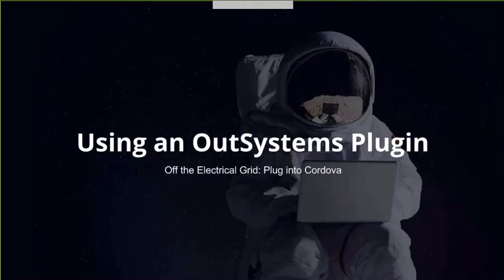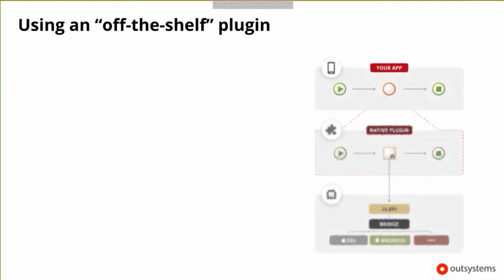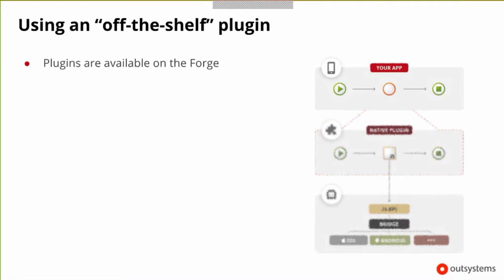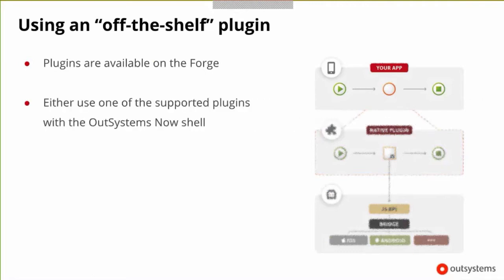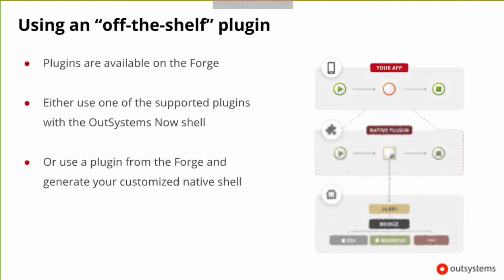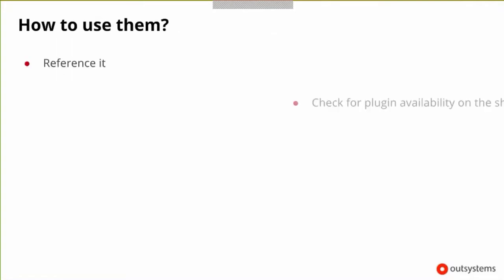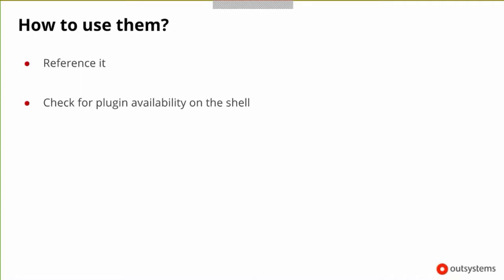Using an OutSystems plugin — let's look at the first level of plugin development. Plugins are available on the Forge, both supported and non-supported. Either you use one of the supported plugins in the OutSystems Now shell and you're ready to go — like the camera, barcodes, etc. — or you can use a plugin from the Forge and generate your customized native shell. You cannot just reference the plugin and use it without generating the shell. Steps: reference it, check for plugin availability on the shell, and use it.